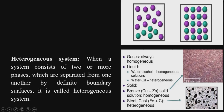A heterogeneous system is one that consists of two or more phases separated from one another by definite boundary surfaces. For example, a mixture of water and oil has a surface separation between the two — that is a heterogeneous system. The mixture of iron and carbon (steel) gives a heterogeneous mixture, while the combination of copper and zinc is homogeneous.